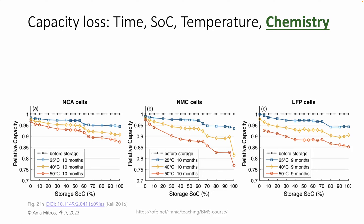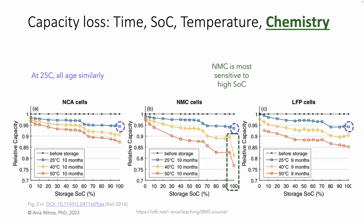Now let's go back to that data and look at differences between chemistries. The first thing that jumps out is that NMC is more sensitive to high state of charge than the other two. The second thing is that at 25°C — room temperature — all three chemistries age nearly identically, which suggests that with good thermal and electrical management, any of these chemistries could provide good performance. The third observation is that NMC is most sensitive to high temperature. Looking at data points for 80% to 90% SOC, NCA and LFP cells show similar degradation at 50°C, while NMC cells lost substantially more capacity.